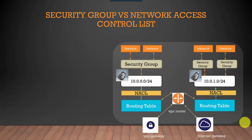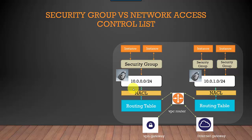In this video we will discuss the difference between security groups versus network access control lists. Both of these are features to monitor the security of the VPC, or Virtual Private Cloud. We've got a virtual private cloud with instances inside, security groups, subnets, network access control lists, and routing tables — a very high level overview of a VPC.